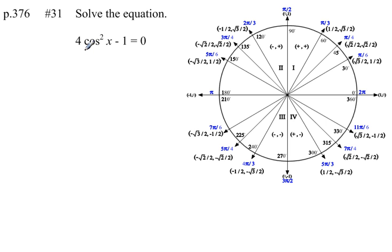Our first step is to get our trigonometric expression, cosine of x, by itself. I can do that by adding 1 to both sides of my equation, then dividing by 4. Let's take care of both of those steps. That'll give me the cosine squared of x equals 1 fourth.